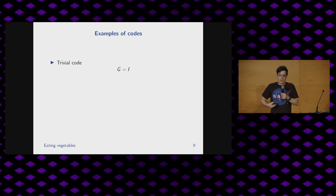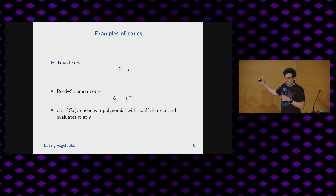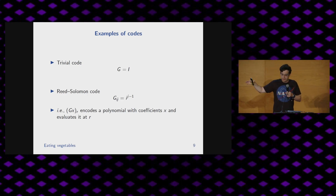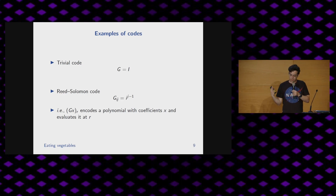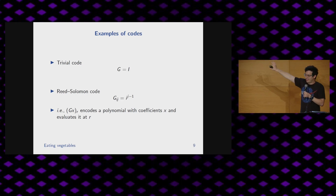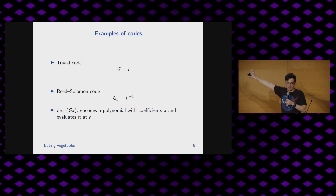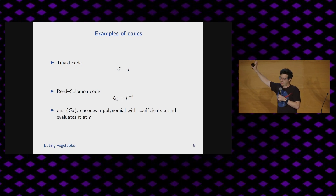The trivial code just says: you give me a message, congratulations, you got the message back. That's a perfectly reasonable encoding under our framework, although not very interesting. The probably more common encoding in ZK is the Reed-Solomon code. If you ever get lost, I'd recommend going back to that one definition. But this is true for arbitrary linear codes, and there are many that are not just Reed-Solomon codes.